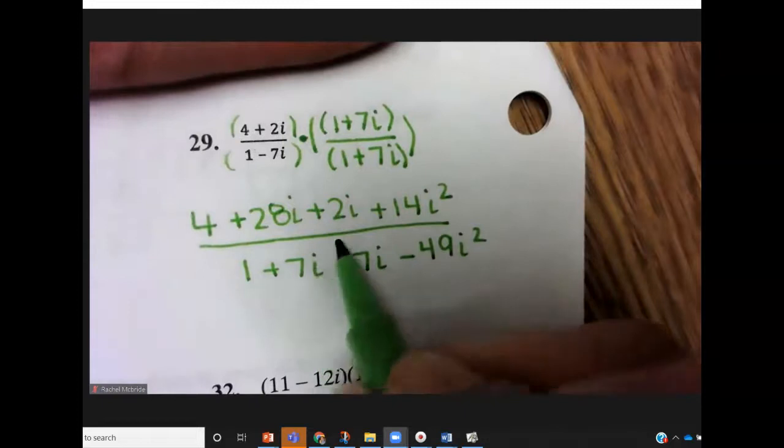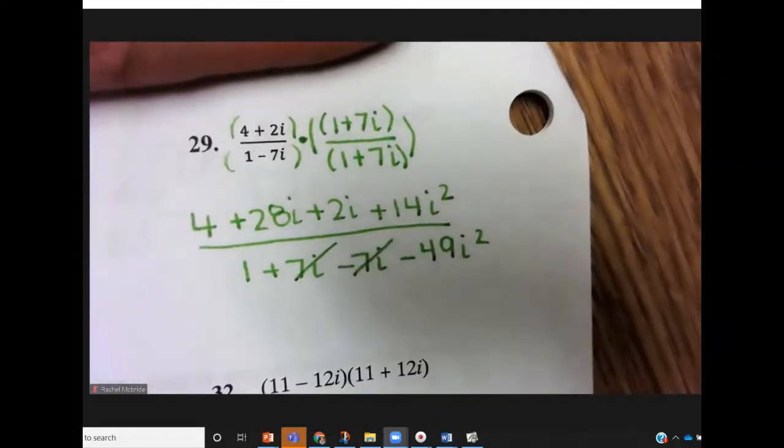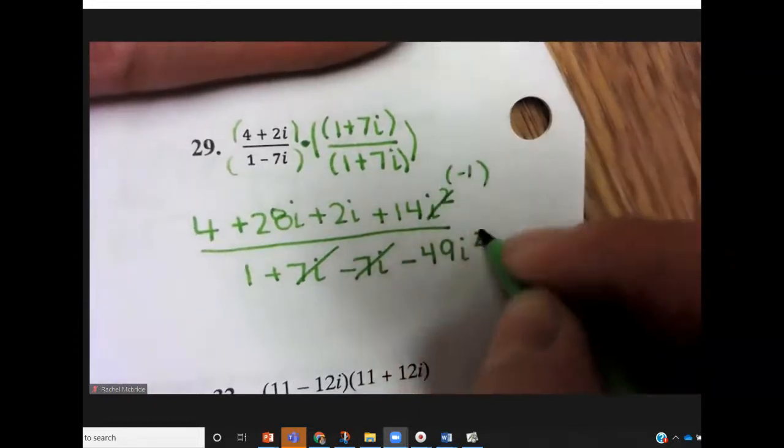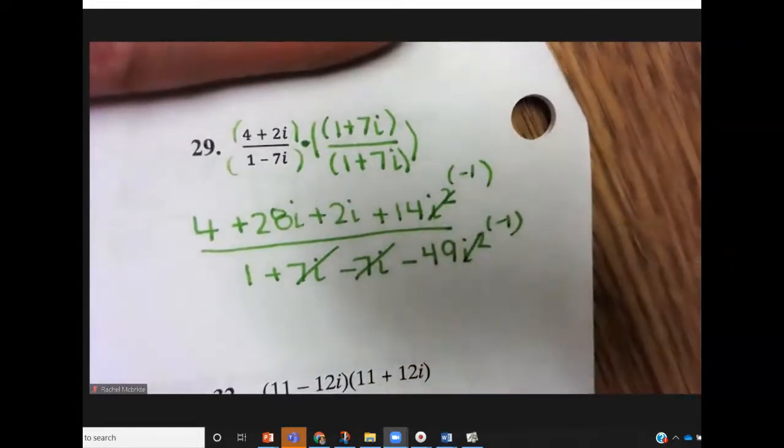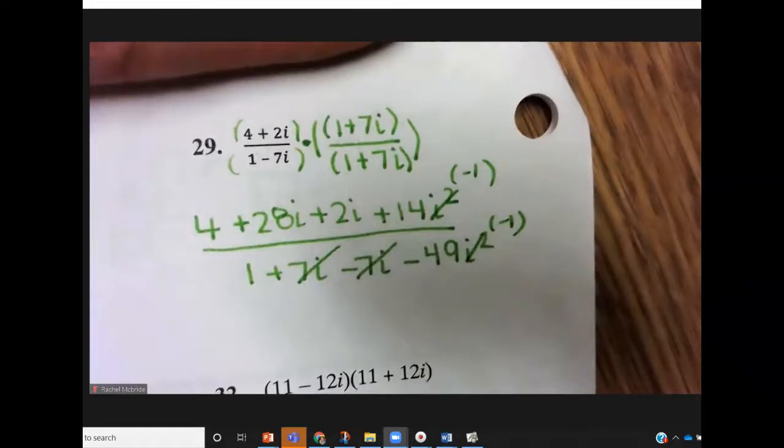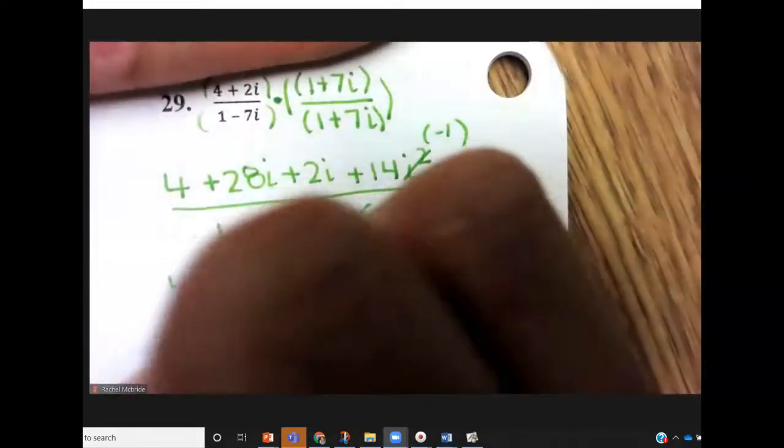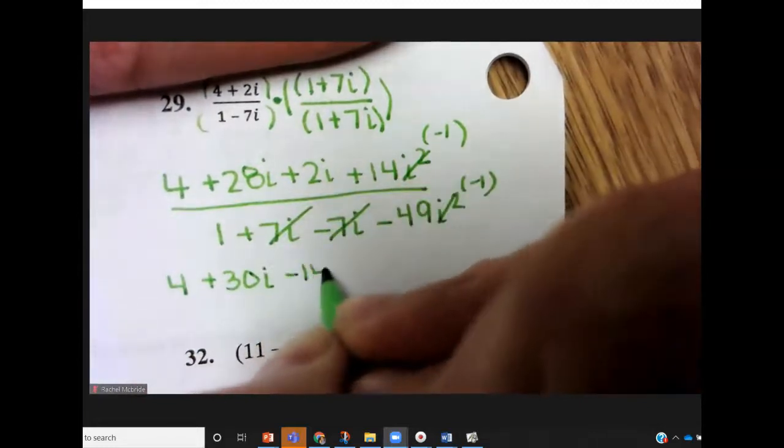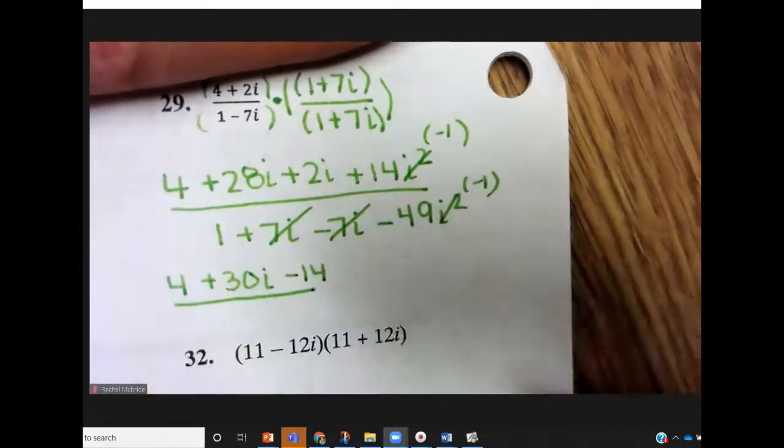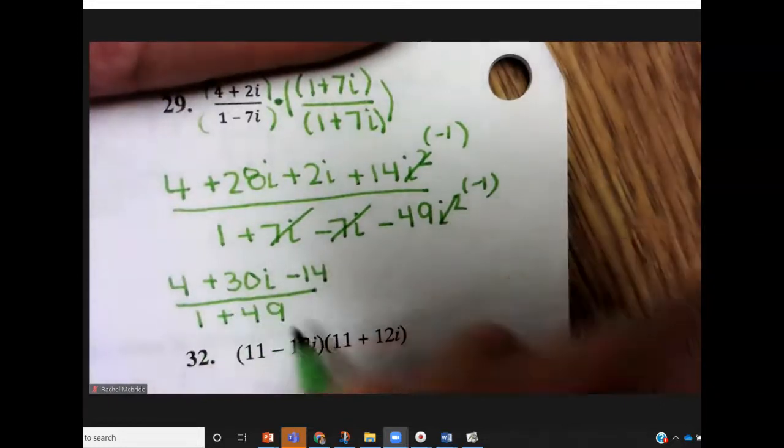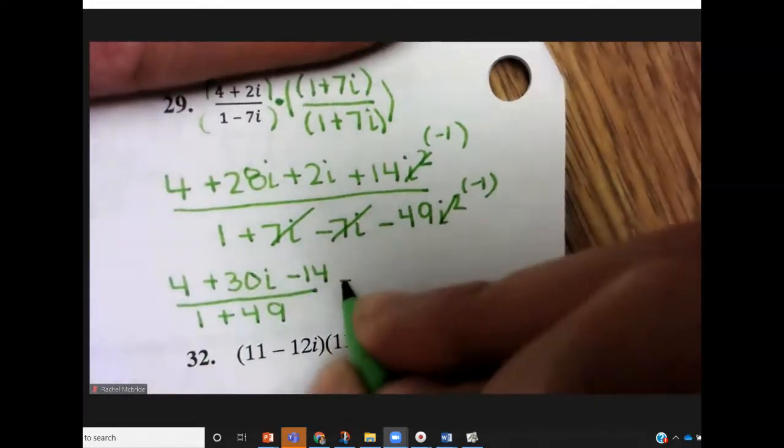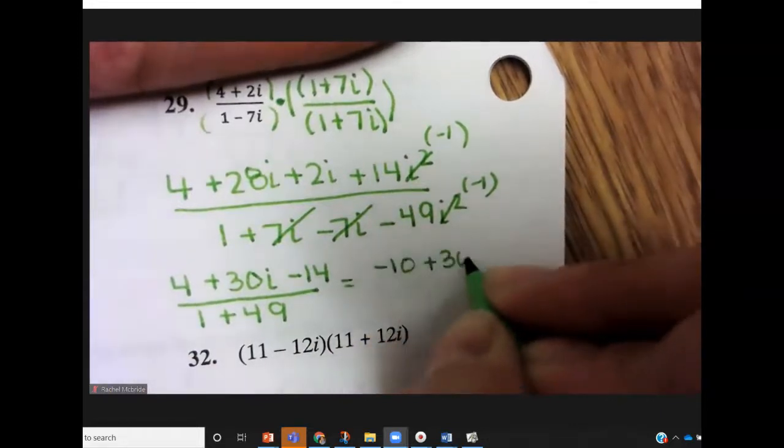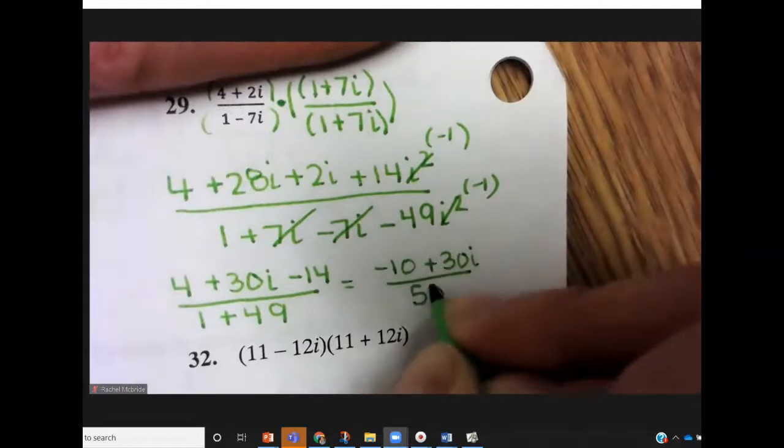In your denominator, the middle term should always cancel. We change i squared to negative 1. So we get 4 plus 30i minus 14 all over 1 plus 49.